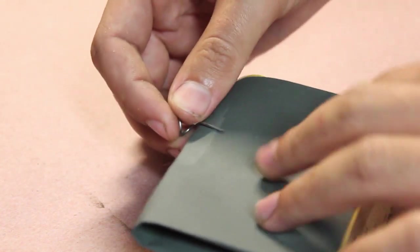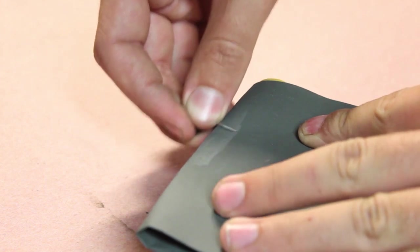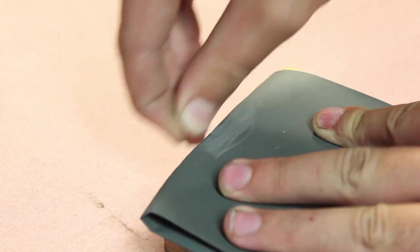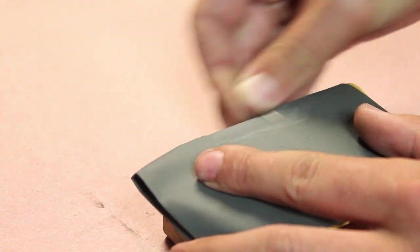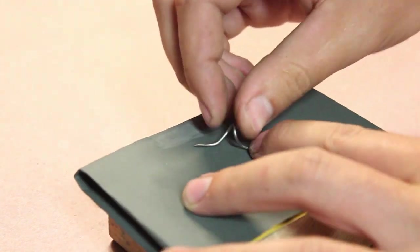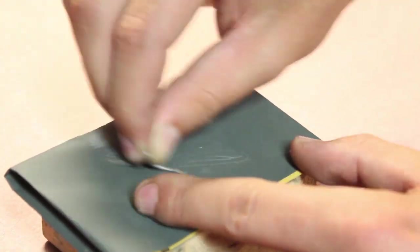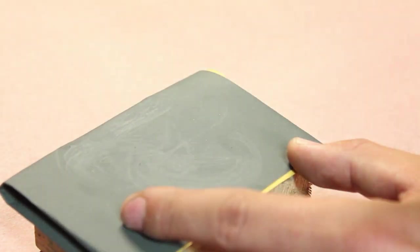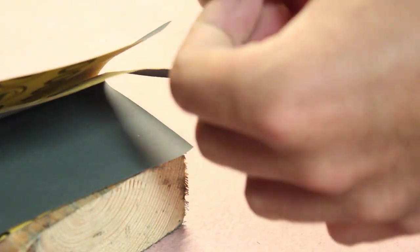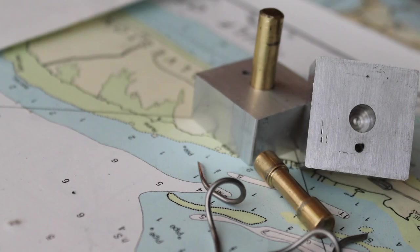And then that final shape was just cleaned up with a bit of sandpaper. And that's the finished guide.